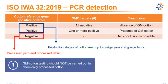During validation of the ISO IWA32 protocol, it was found that materials from which suitable cotton DNA can still be extracted range from cotton seed up to greige yarn and greige fabric — the unprocessed cotton materials. Processed yarn and processed fabric do not contain sufficient suitable cotton DNA for GMO analysis.